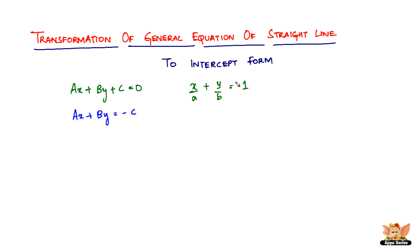And then if you see, we've got 1 on the right hand side and there is no c in the whole equation. So at the same time, you need to get rid of c as well as get 1 on the right hand side. So what you do is just divide throughout the equation by negative c. You get minus a by c times x, minus b by c times y, equals 1, because negative c by negative c equals 1.